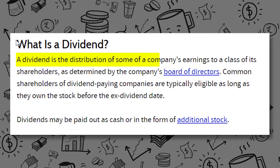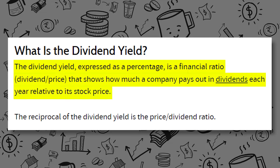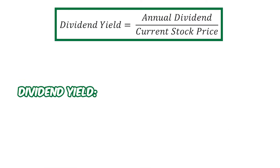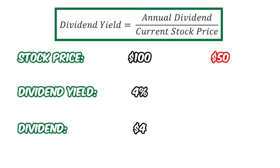A dividend is typically a fixed amount that you get regardless of its share price. Dividend yield is basically a percentage of the share price that we are getting as dividend. For example, if the dividend yield is 4% and the stock price is $100, we will get $4 of dividend from the company. If the company's share price falls to $50, the dividend yield will be 8%, which also means we are still getting $4 as dividend.